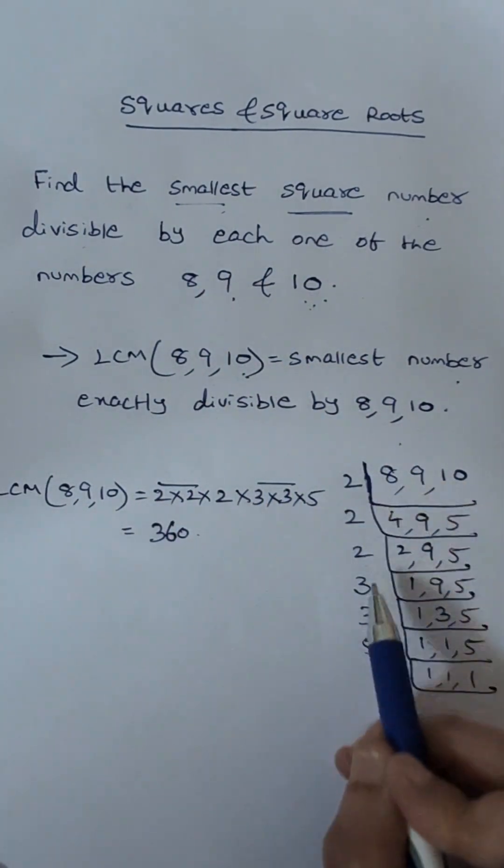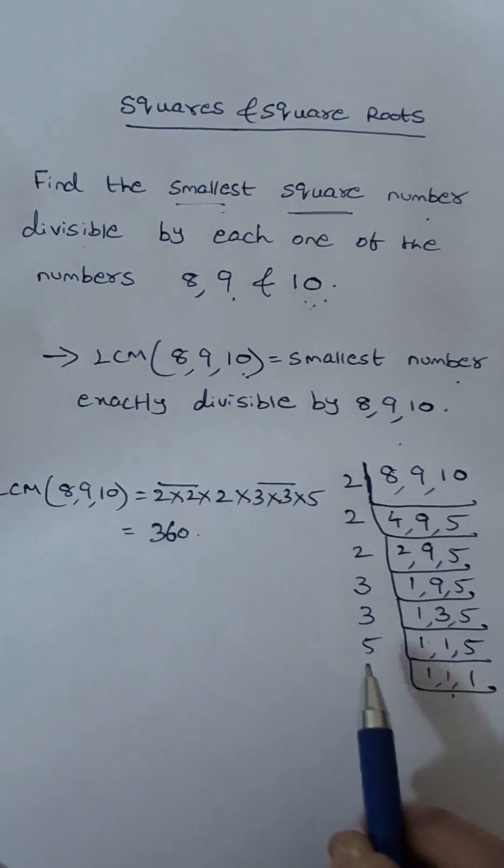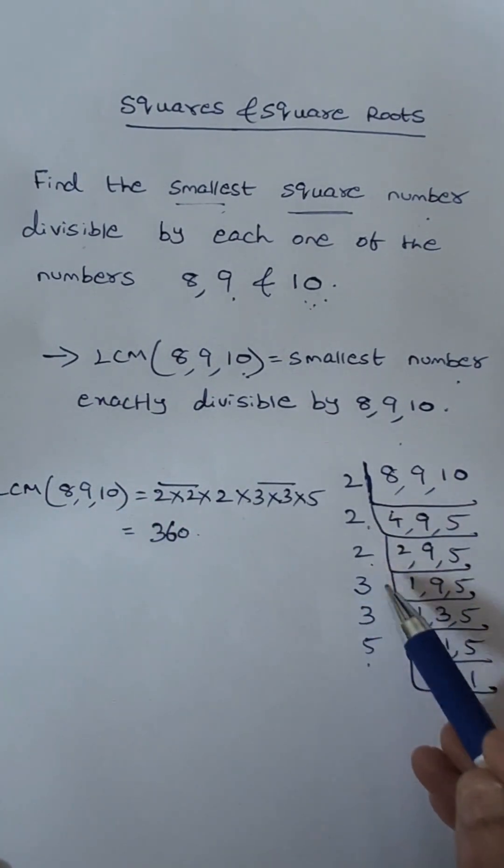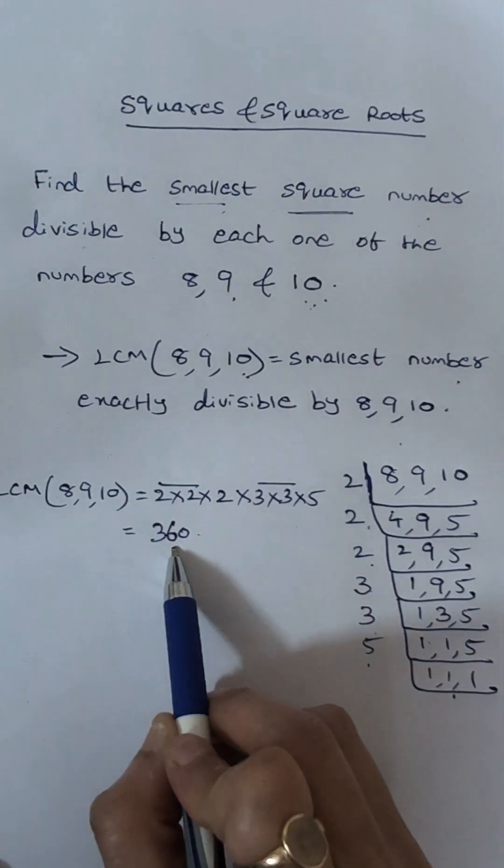So here by division method I have already found the LCM of 8, 9, 10 so LCM of 8, 9, 10 will be 2 into 2 into 2 into 3 into 3 into 5 which is 360.